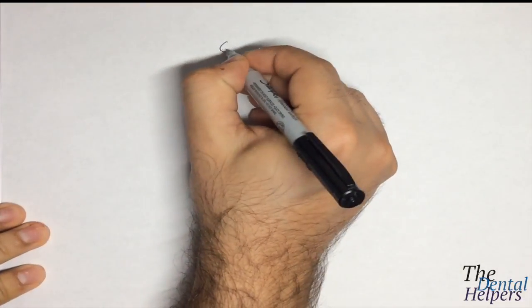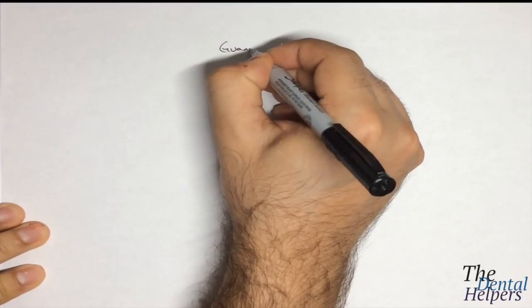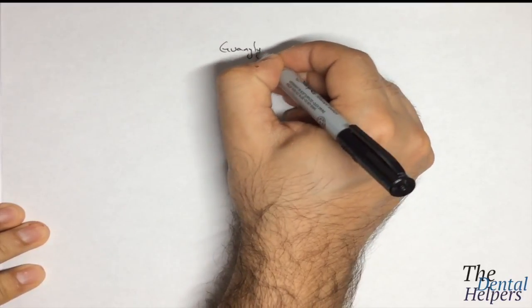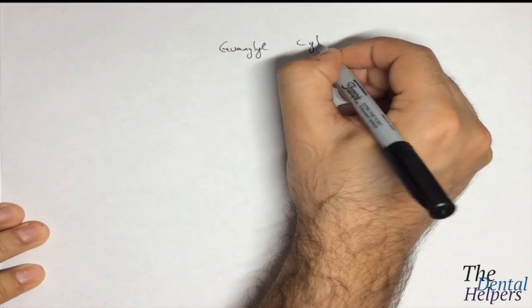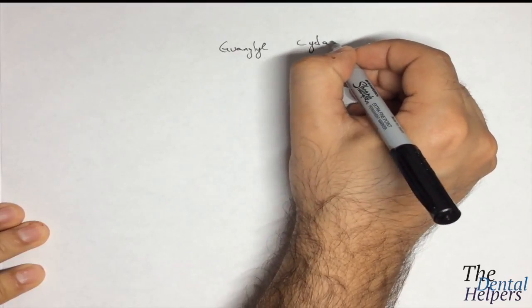So we're going to look at the guanyl cyclase pathway. Basically, what happens with guanyl cyclase is that you have two different forms leading to the formation of this compound.